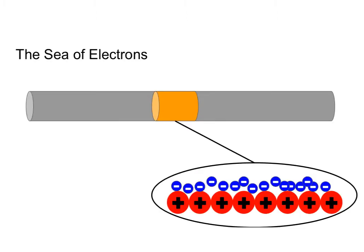To talk about current we're going to start by talking about how metals bond. Metals bond using something called metallic bonds. The important thing about metallic bonds is that when metals are bonded, the electrons in their outer shell — their valence electrons — are shared between all the metals. This creates something we call the sea of electrons.